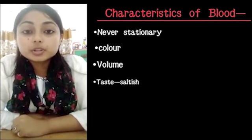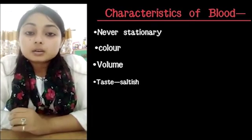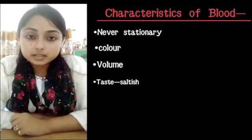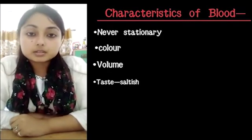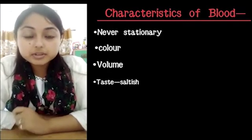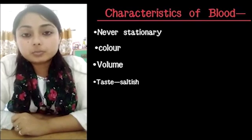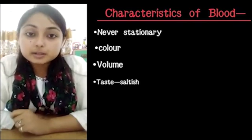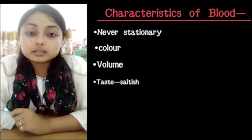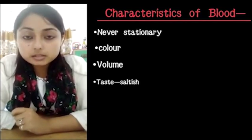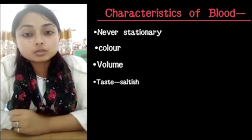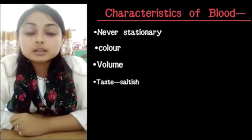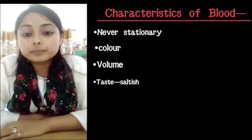Next, we come to its color. Blood is bright red in color. Which type of blood is bright red? The oxygenated blood. Oxygenated blood is that type of blood which contains comparatively more amount of oxygen. So oxygenated blood is bright red in color.